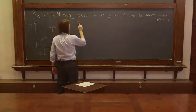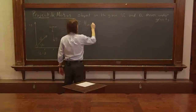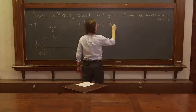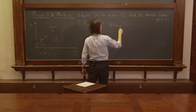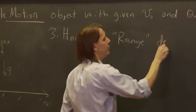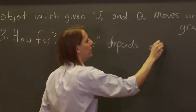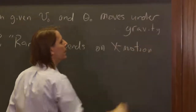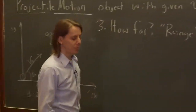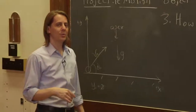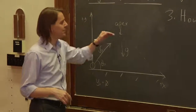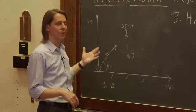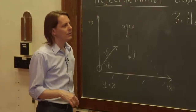Our third question is how far does it go — the range. That distance depends on the x motion, but I won't say only the x motion, because it actually depends a bit on the y motion too. It depends on the time it's in the air. So how far it goes isn't just how fast it's going in x, but also how long it's in the air, which also depends on y.